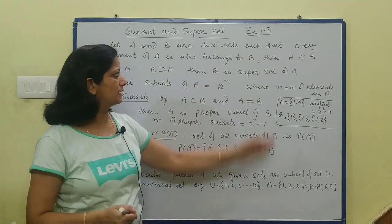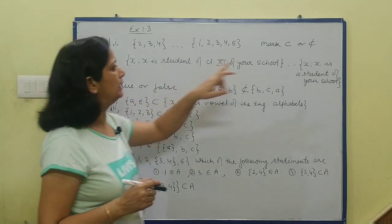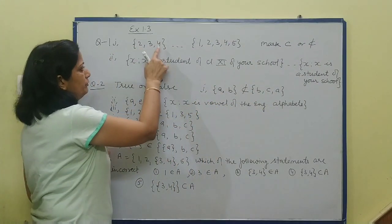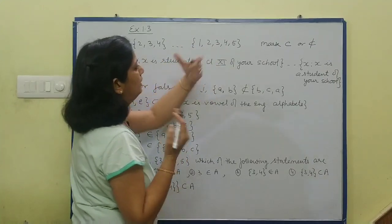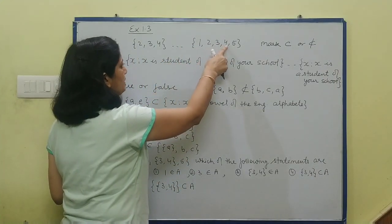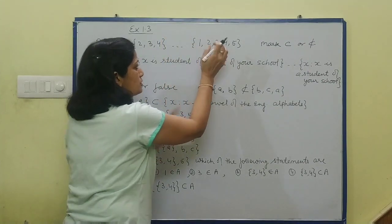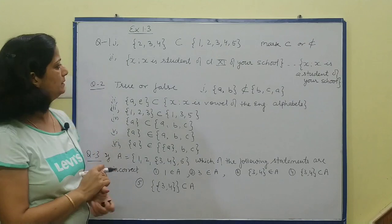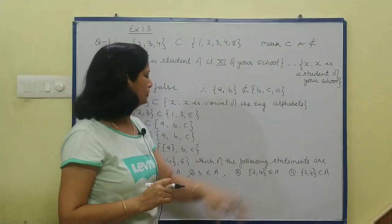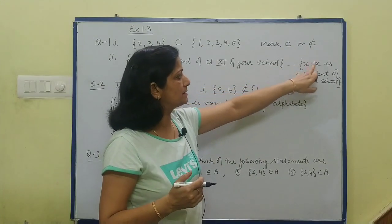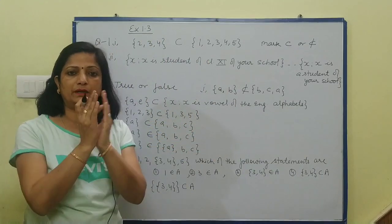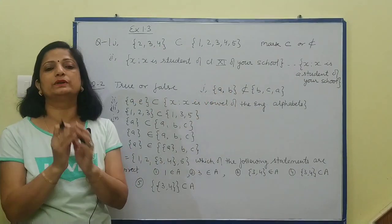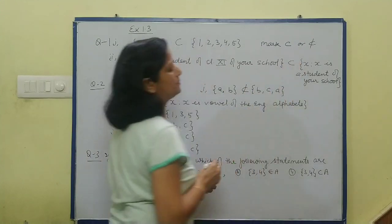चलिए start करते हैं Exercise 1.3. First question में आपको केवल mark करना है — this is the sign of subset and this is not a subset. Set {2, 3, 4} — यहाँ पर mark करना है कि ये subset है या नहीं। 2 भी lie करता है, 3 भी lie करता है — every element of this set also belongs to this set — तो this is a subset. Similarly, x such that x is a student of class 11th of your school — जो 11th के students हैं वो complete students का ही एक part हैं — that means this is also a subset.